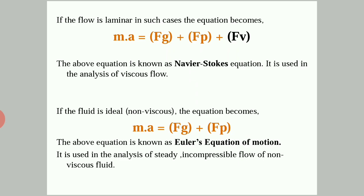If the flow is laminar, then the equation becomes: m·a = Fg + Fp + Fv, that is gravity force plus pressure force plus viscous force. This equation is known as the Navier-Stokes equation, and it is used in the analysis of viscous flow.